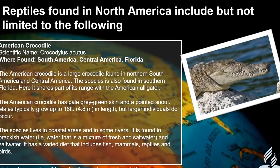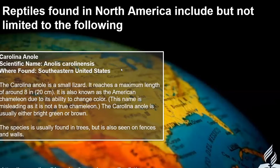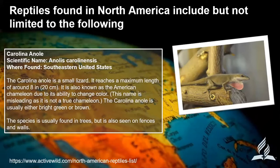The Carolina anole is a small lizard reaching a maximum length of approximately eight inches (20 centimeters). Also known as the American chameleon due to its ability to change color, though the name is misleading as it is not a true chameleon. The Carolina anole is usually either bright green or brownish in color. It's usually found in trees but also seen on fences and walls — a very common lizard in the southeastern United States.